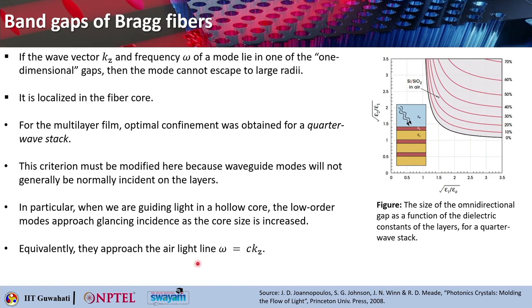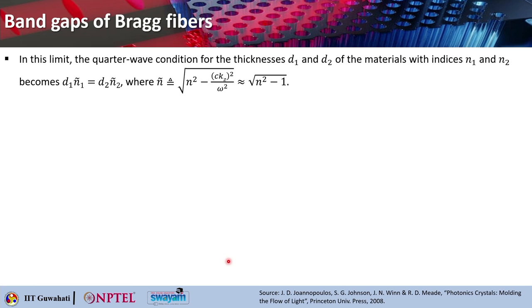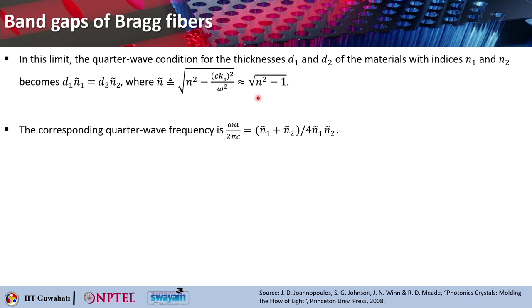In particular, when you are guiding light in a hollow core, the low order modes will basically approach glancing incidence — meaning the incident angle will be very large — as the core size will be increased. So almost the rays will be parallel to the interface of the core and cladding. That way you can say that they approach the light line which is ω = Ck_z. In this particular limit the quarter wave condition for the thickness d₁ and d₂ of the materials with indices n₁ and n₂ would become d₁·ñ₁ and d₂·ñ₂ where ñ is basically √(n² - (Ck_z/ω)²), which simplifies to √(n² - 1).